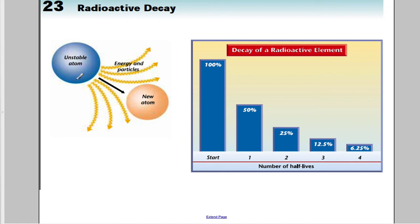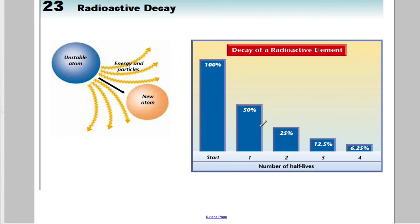Radioactive decay is when you take an unstable atom that emits energy and particles until it has reached a stable state as a new atom. When the material starts, there will be 100% of its unstable material in it. After one half-life, there will be 50% remaining. After two half-lives, that gets cut in half again to 25%. After three half-lives, what was remaining gets cut in half again, and so on — keep getting cut in half until you practically have almost nothing left.